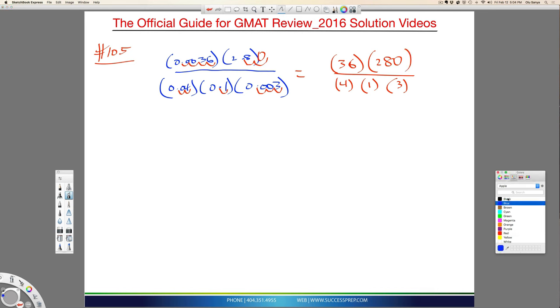Let's reduce this out and clean things up. 4 goes into 28 seven times, and with this 0, it's 70. 3 goes into 36 twelve times. So what we have now is 12 times 70.